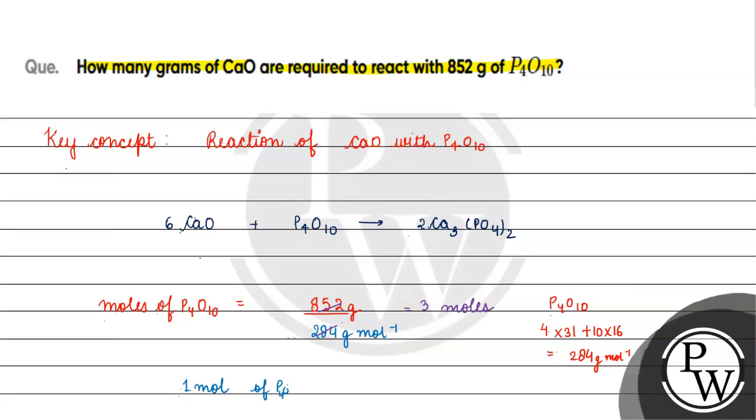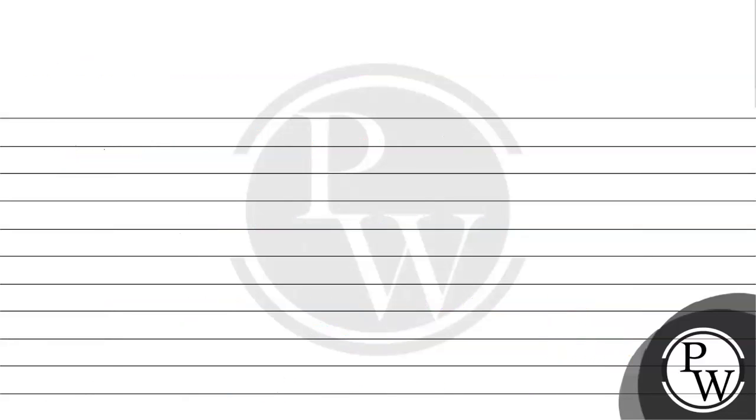1 mole of P4O10 reacts with 6 moles of calcium oxide, then 3 moles of P4O10 will react with 18 moles, 6 times 3, of calcium oxide.